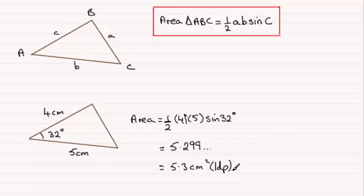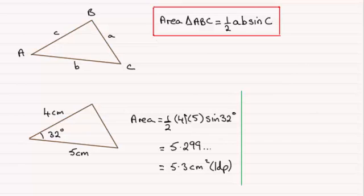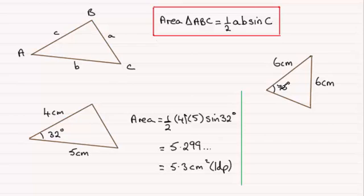So a very easy formula to work with — useful when you don't have the height of the triangle. Now I've got one here that you might like to try. A triangle with two sides of 6cm and 6cm, and this angle is 70 degrees. Have a go at that — I'll give you a moment to pause the video.